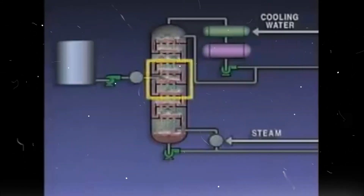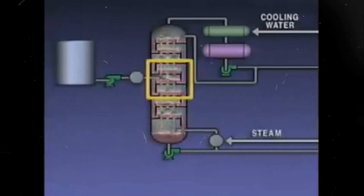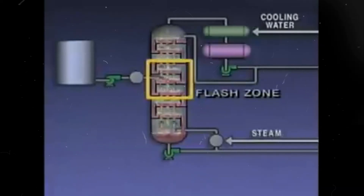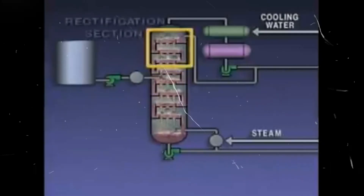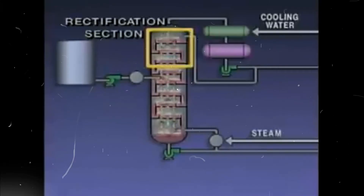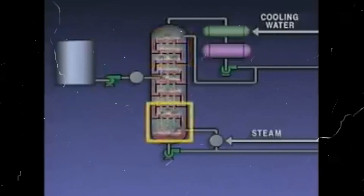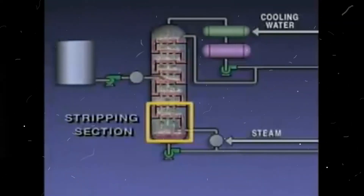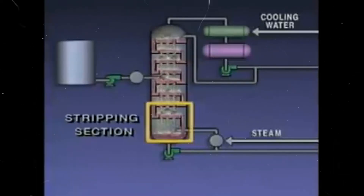Not every distillation tower is designed in the exact same way. However, every tower can be divided into three basic sections. The middle section is where the feed enters the tower and part of the feed vaporizes — this vaporization is commonly known as flashing, so this section is often called the flash zone. The section above the flash zone is called the rectification section, where the concentration of lighter components increases. The section below the flash zone is called the stripping section, where the lighter components are vaporized or stripped from the heavier liquid.